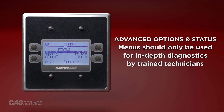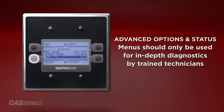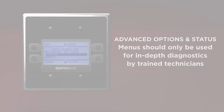The advanced options and status menu should only be used for in-depth diagnostics by trained technicians. In these menus, you can view real-time temperatures, relative humidities, uptime, and HMI data, as well as assign offsets to those values to further tune that HMI's precise control over space conditions.